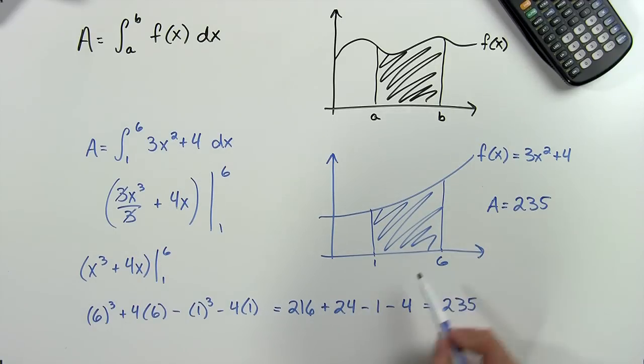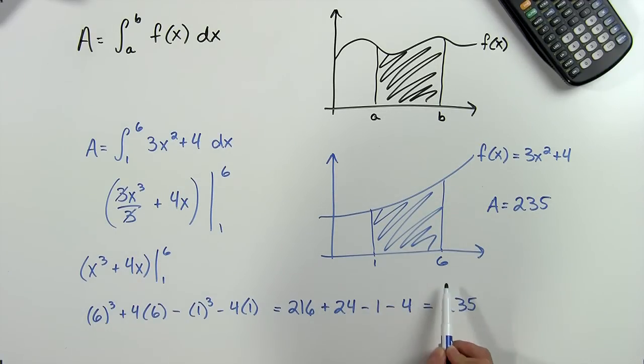Keep in mind that if our shaded region had been below the x-axis, our answer would have been negative, but of course the area would still be positive. And that's how we find the area of a shaded region under a curve. Thanks for watching!